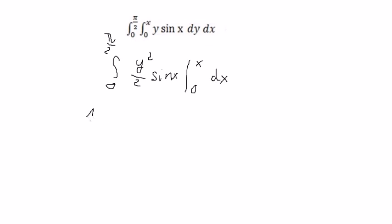So you get 1 over 2, we put it outside the integral from 0 to π/2, and we have x squared multiplied with sine x dx.